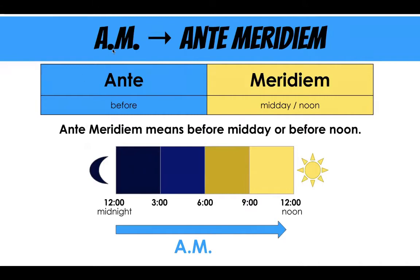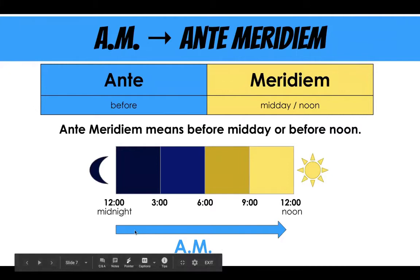So, a.m. and p.m. A.m. means anti-meridium. Now, we learned earlier this year what a prefix is, and "anti" is a prefix that means "before," and "meridium" means midday or noon. So, anti-meridium means before midday, or before noon. From midnight all the way until noon, that is anti-meridium time, or a.m.